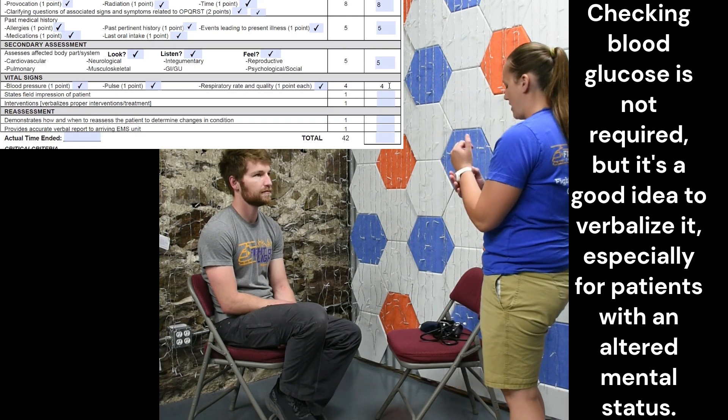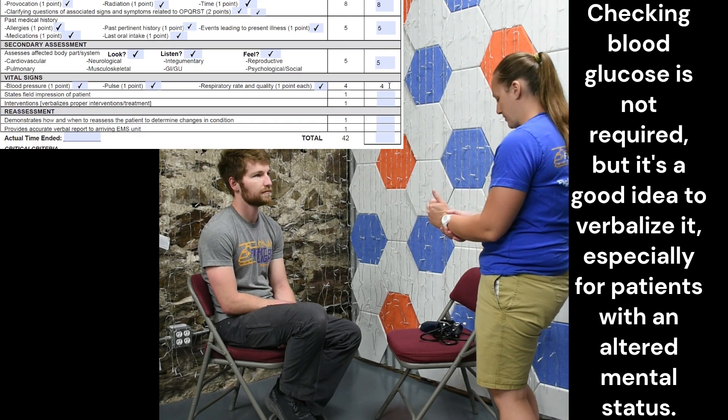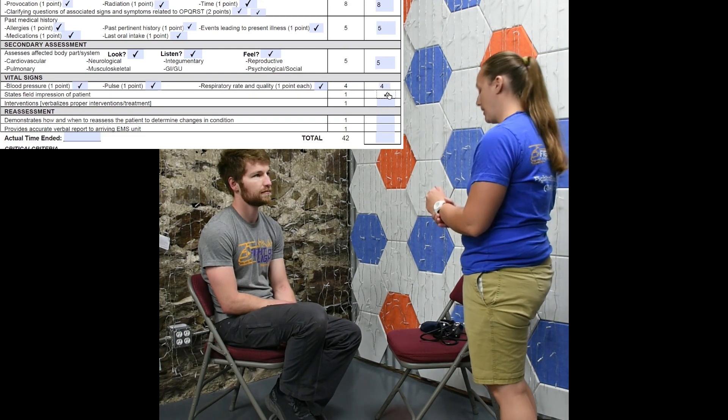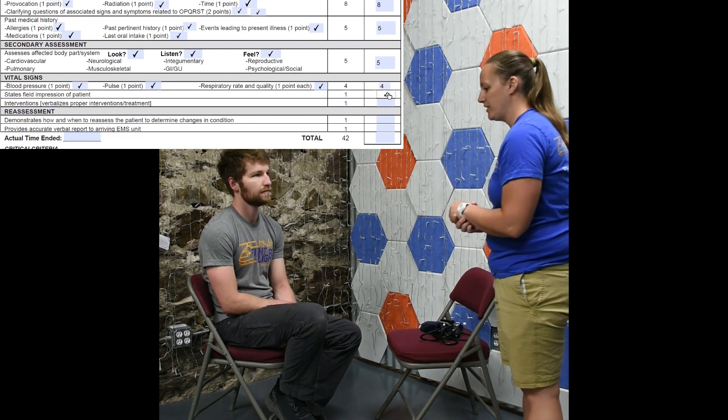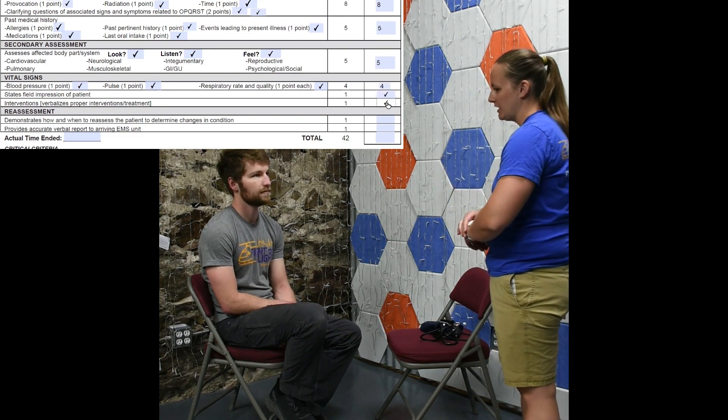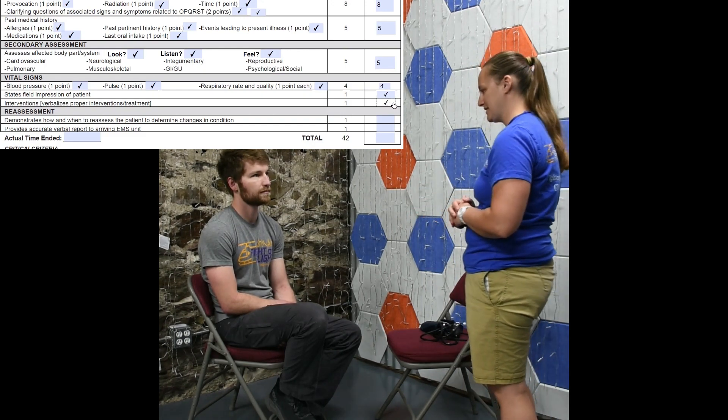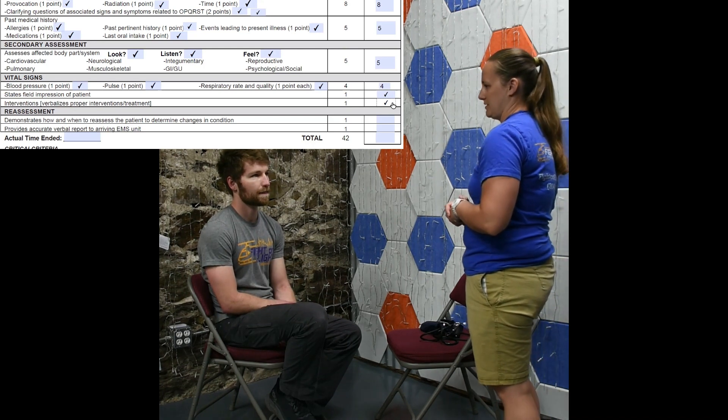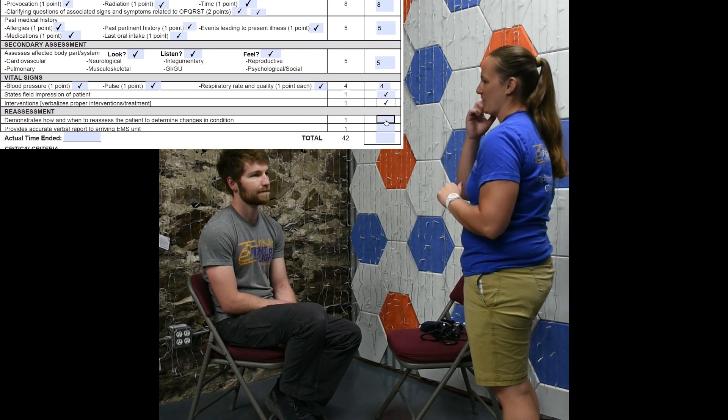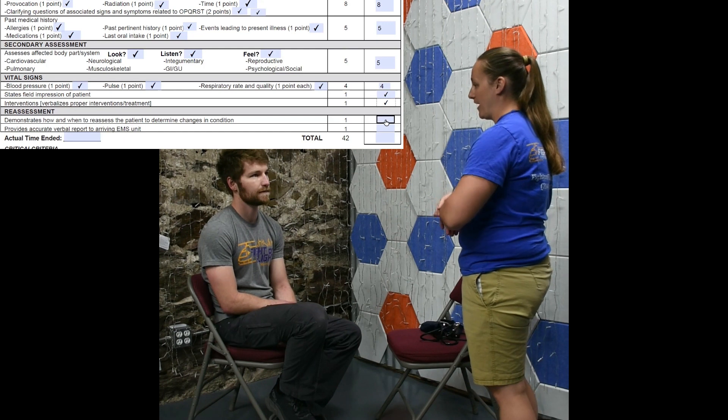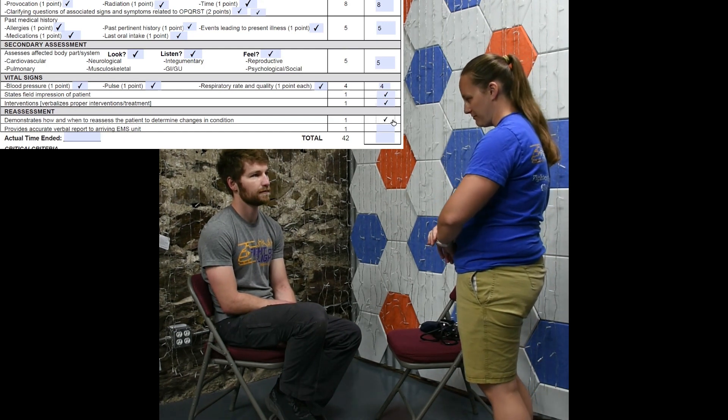So my field impression is that this patient is experiencing an appendicitis. I don't have any interventions in mind that I would give. I don't have any medications that I could give. So I'm going to call medical control and see if they advise any interventions and I'm going to repeat my vitals and my primary assessment every five minutes.